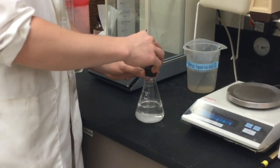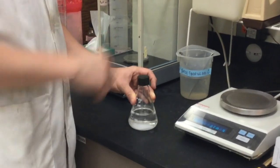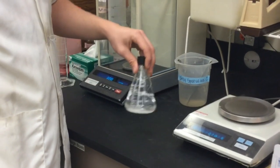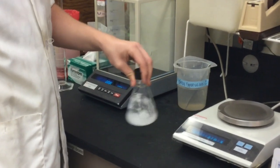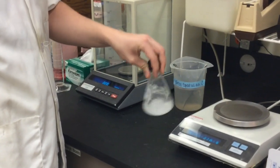Now we will add the cap back to the flask and swirl the flask in order to dissolve the sodium chloride crystals. We will do this until the solution is clear and all the sodium chloride crystals are dissolved.